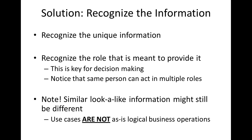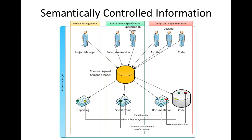Note also that similar lookalike information might still be different — use cases are not the same as logical business operations. In a semantically controlled fashion we can agree on a unique unified model where all parties enter information, which is then automated into final target information models such as pure code or Word documentation. Each role can still provide it manually, but the more we automate, the more power we get from the semantically controlled information.